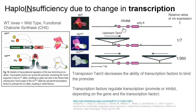Mutations in the introns, if it messes with which exon gets made, they may impact the phenotype, but not as certainly as a mutation in the exon. And then mutations on the regulatory sequence can also impact the phenotype.